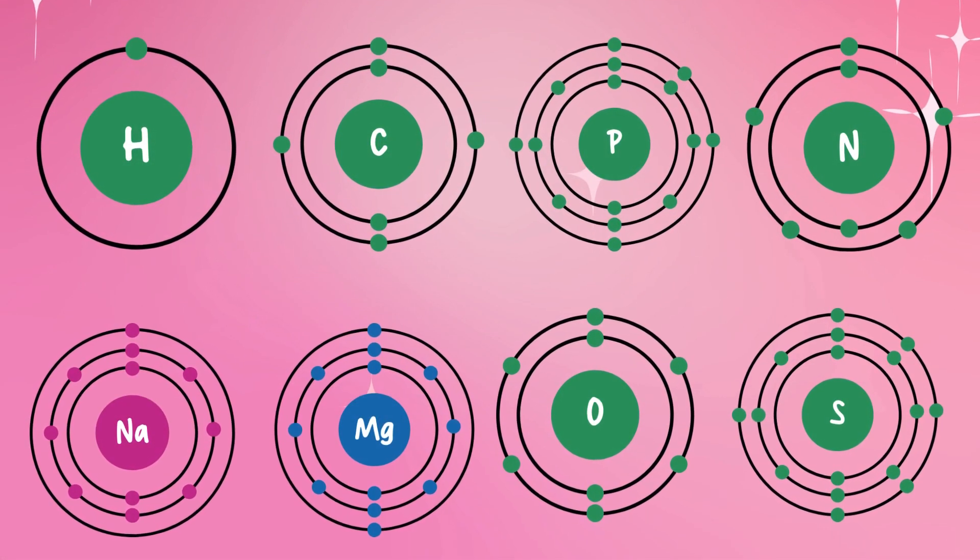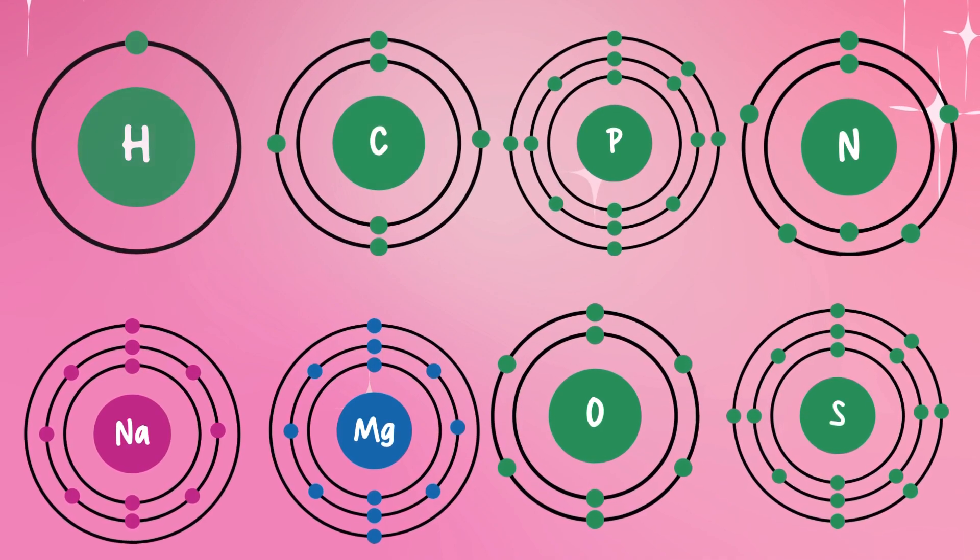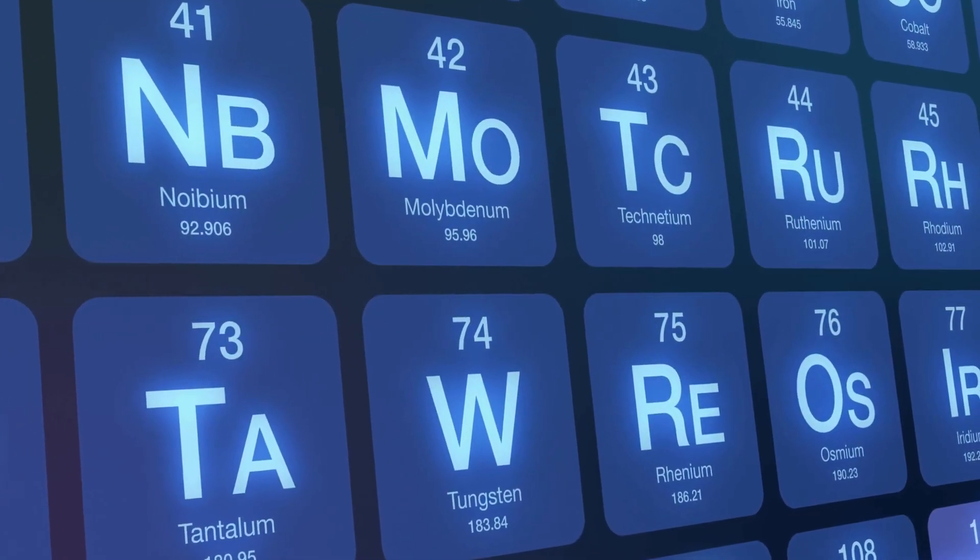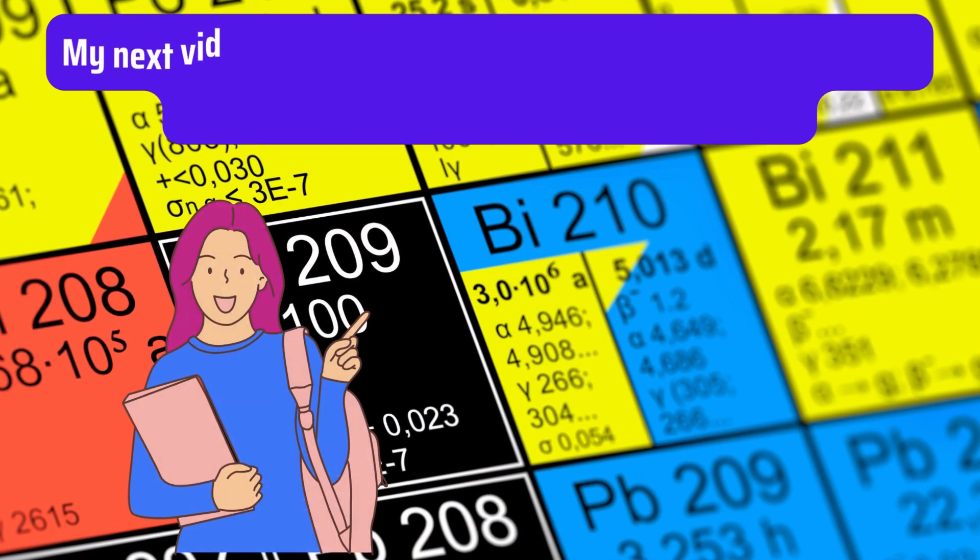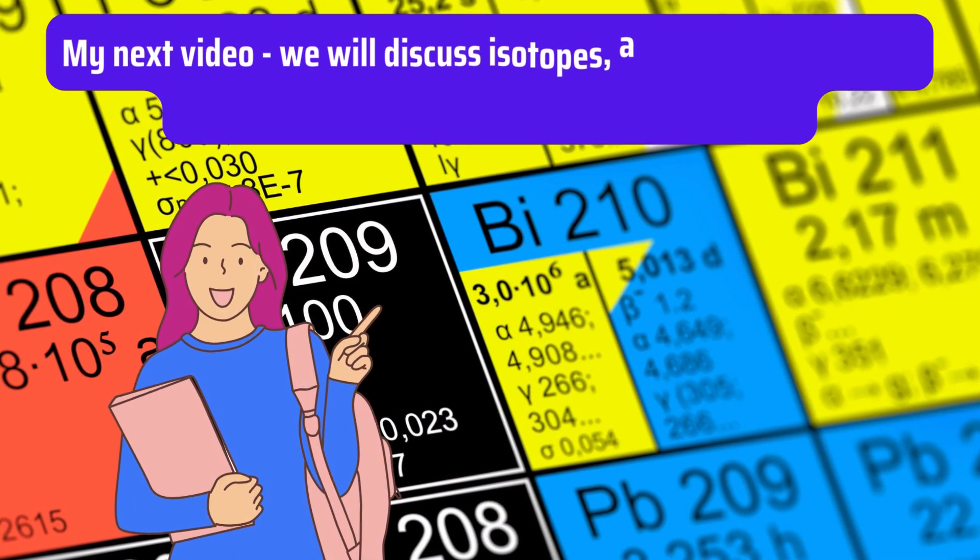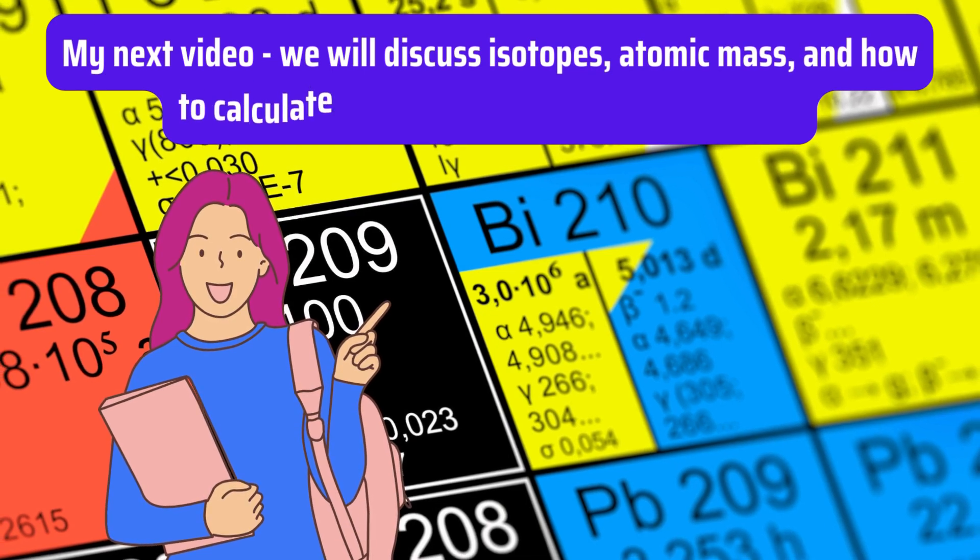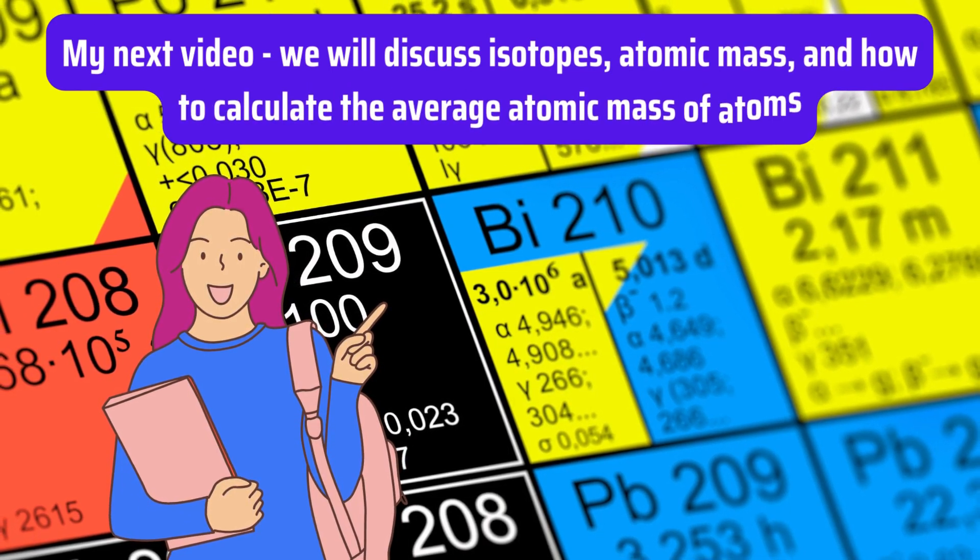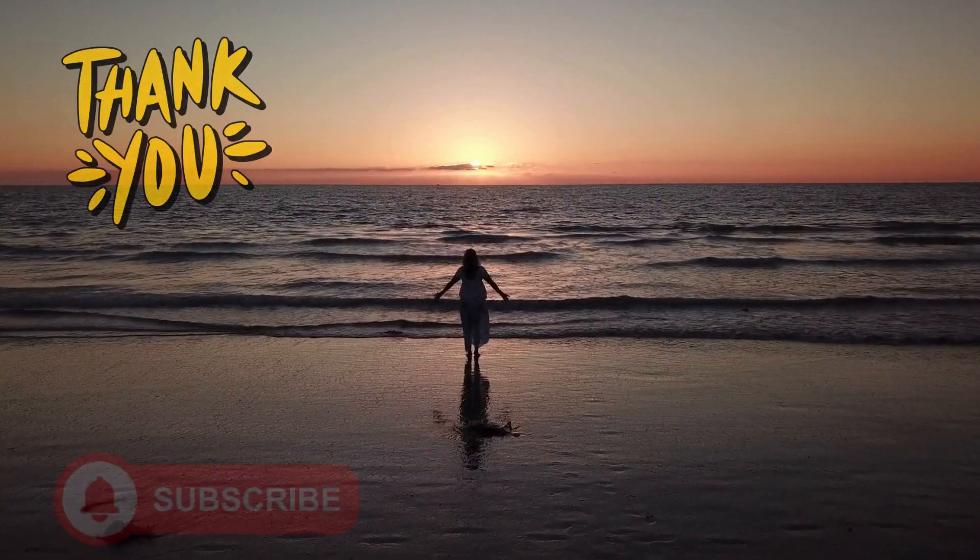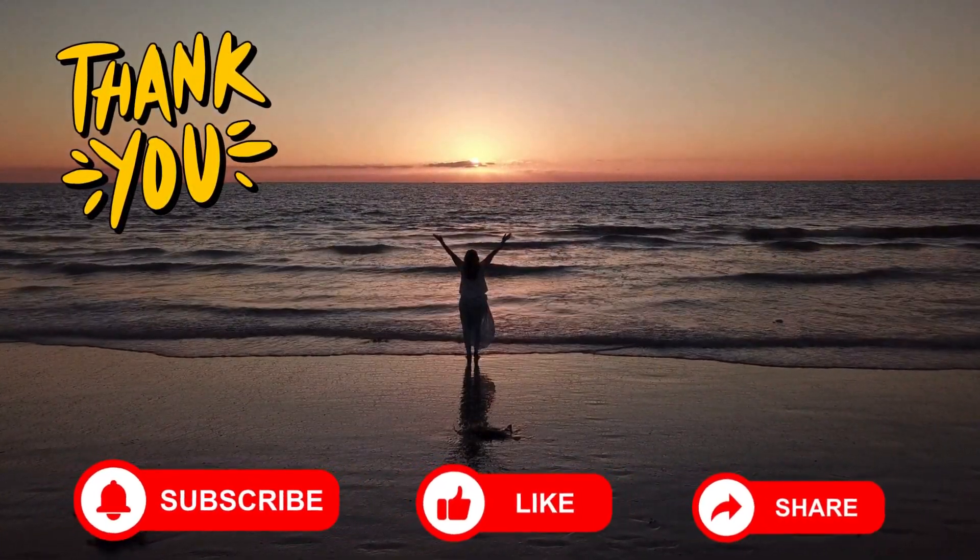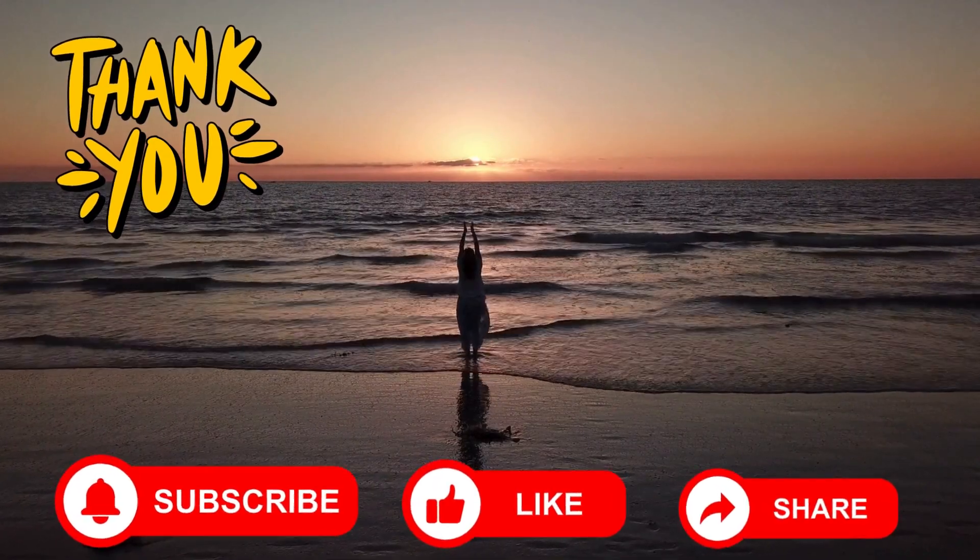As you can see, understanding the organization of electrons within an atom is key to unlocking the secrets of the periodic table. I will see you in my next video where we will discuss isotopes, atomic mass and how to calculate the average atomic mass of atoms. Please subscribe, like and share. Happy learning. Thank you.